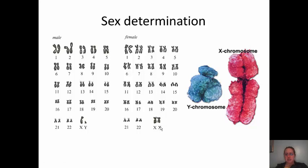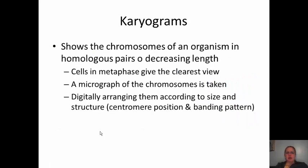Because females have two X chromosomes, they can only pass an X chromosome to a child. Therefore, sex determination at fertilization is 100% controlled by the sperm — whether the sperm is carrying an X or a Y. The last thing we'll talk about today is a karyogram or karyotype, which shows the chromosomes of an organism in their homologous pairs of decreasing length. Cells in metaphase give the clearest view, though they can be taken in any phase. The cells are stained and then ruptured.